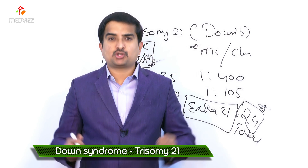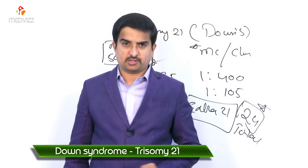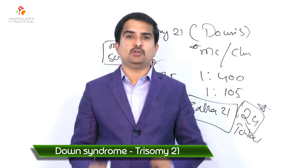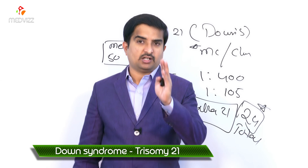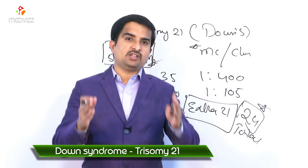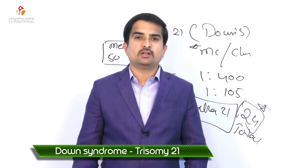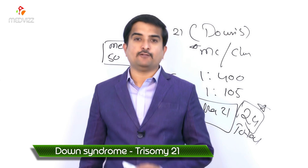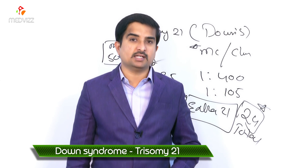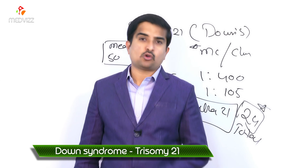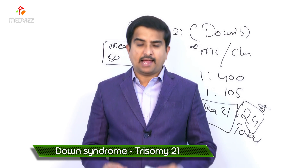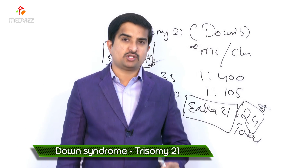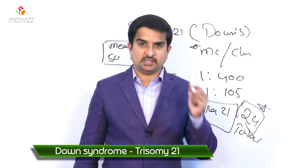Trisomy 21 patients also have a weaker immune system, increasing their risk of infections. All leukemias — including acute lymphoblastic leukemia (ALL) and AML — are more common in these individuals. These are the important points to know about Trisomy 21, or Down syndrome.